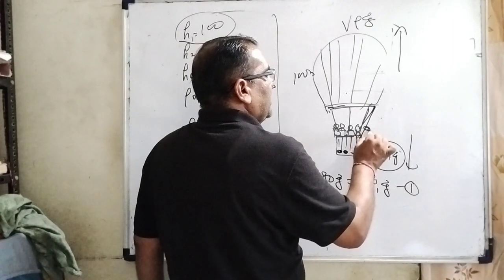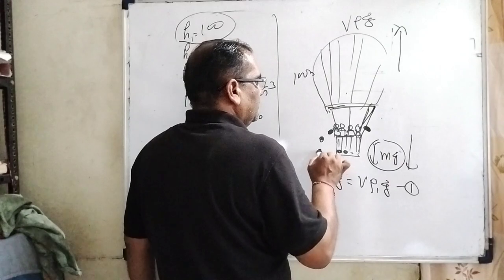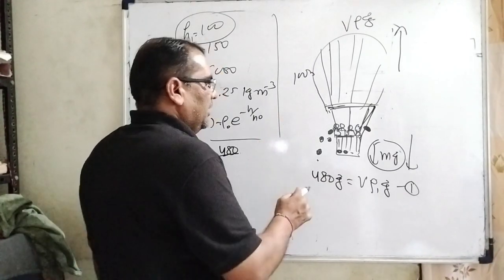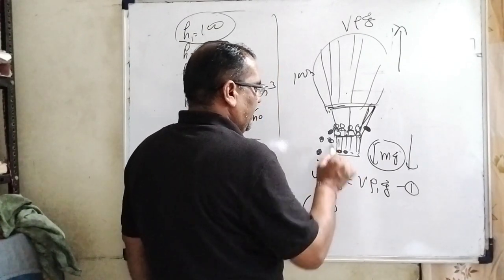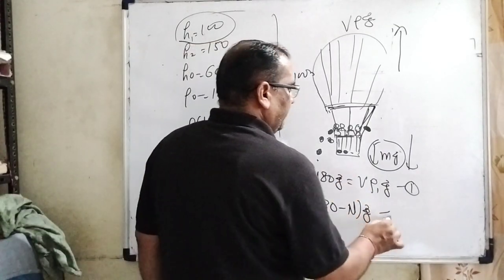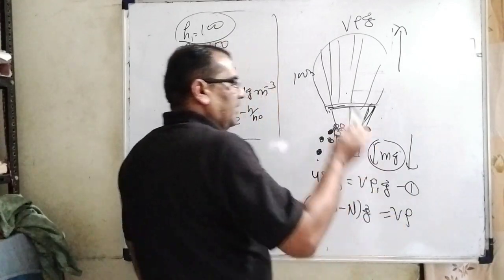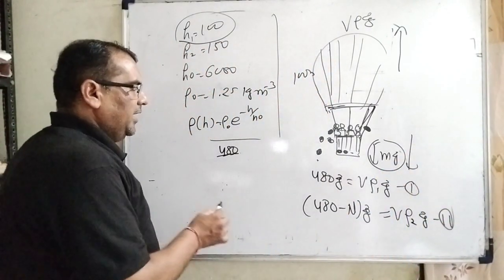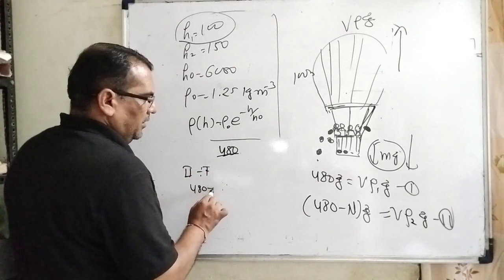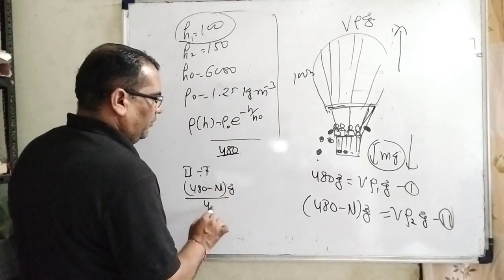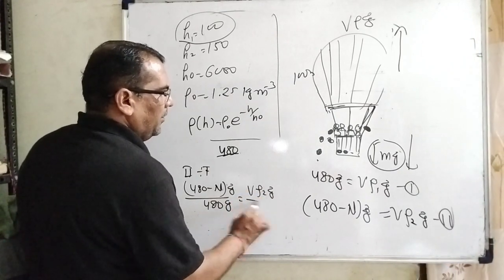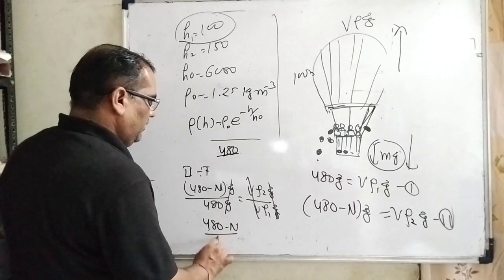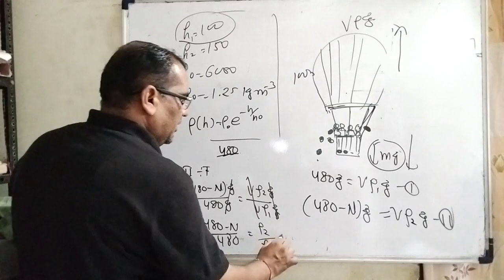After some time, some sandbags are thrown downward. The balloon rises up and after a certain height reaches equilibrium condition. Let us consider n sandbags are thrown out. So (480-n)g = Vρ₂g. This is the second equation. Dividing the second equation by the first: (480-n)g / 480g = Vρ₂g / Vρ₁g. After canceling g, V, and g, we get (480-n)/480 = ρ₂/ρ₁. This is equation number 3.